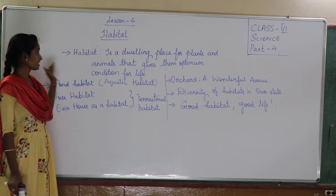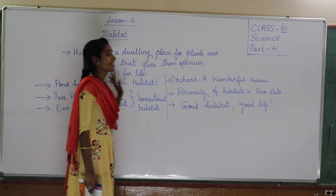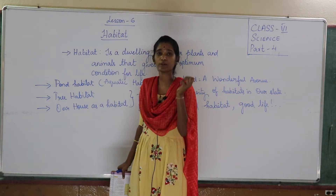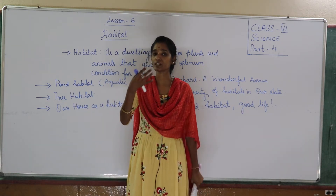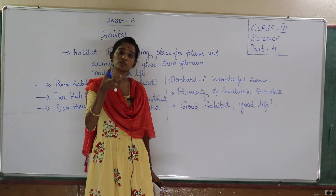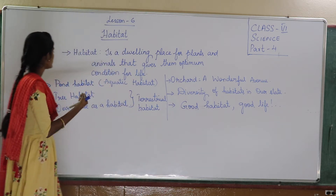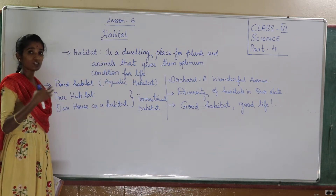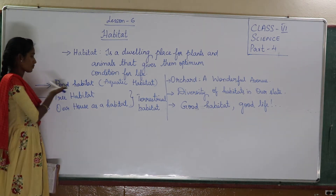First, habitat. As I told you, habitat is nothing — it is a place where plants and animals are living according to their suitable weather conditions. There are different types of habitats. Habitat is a place where plants and animals live.